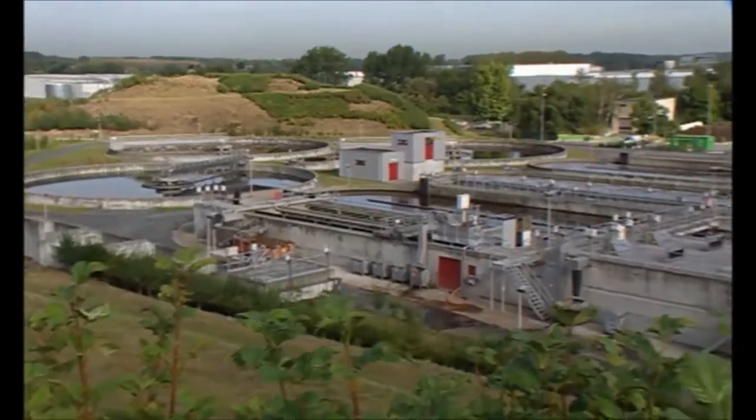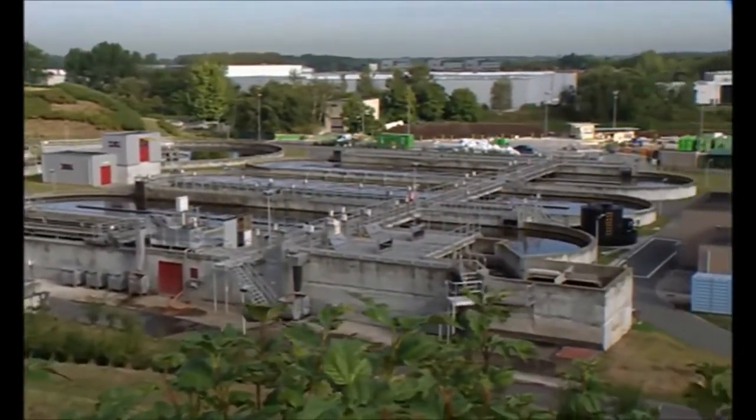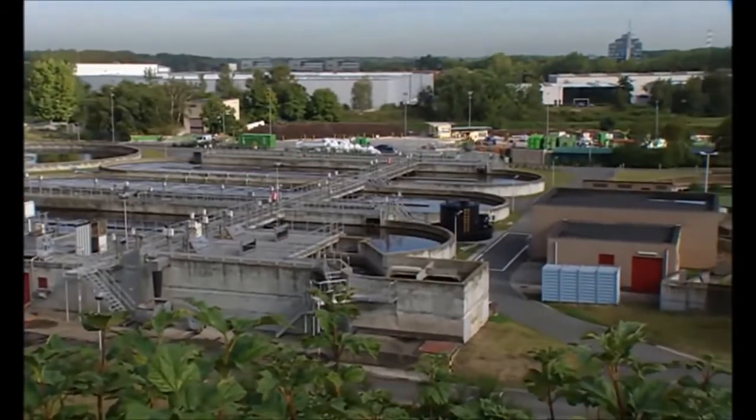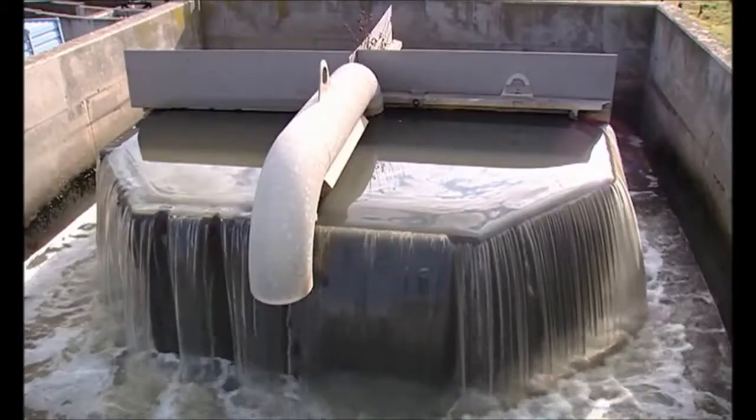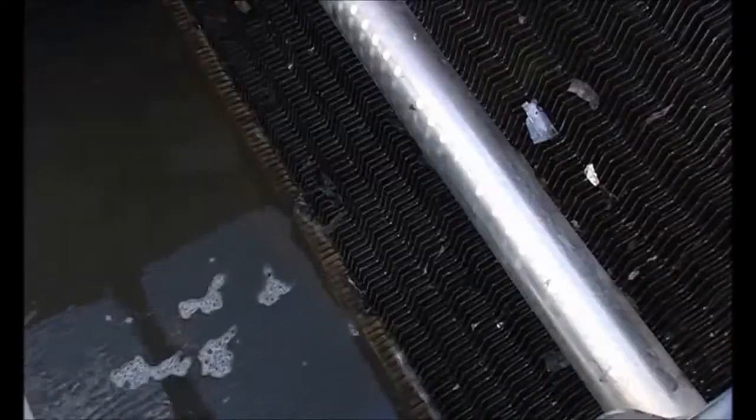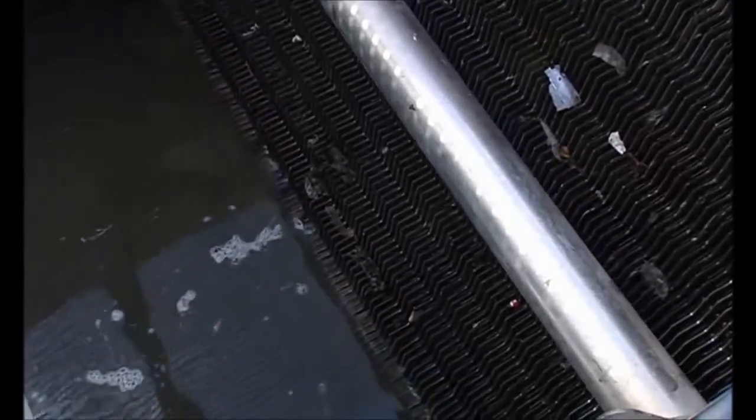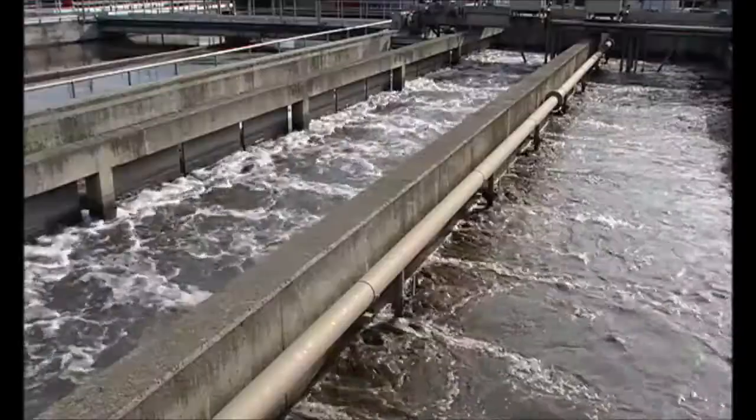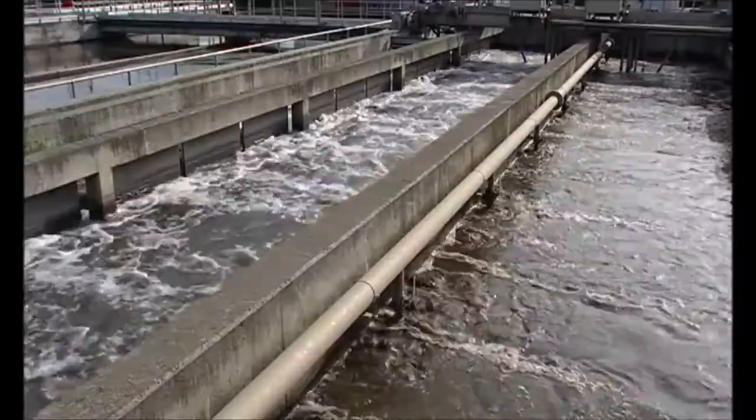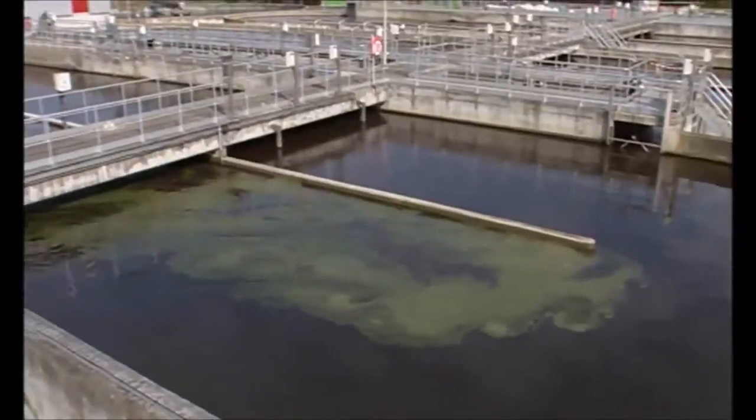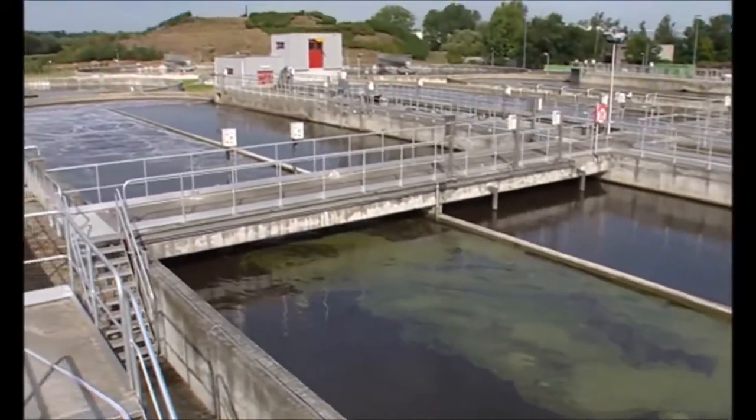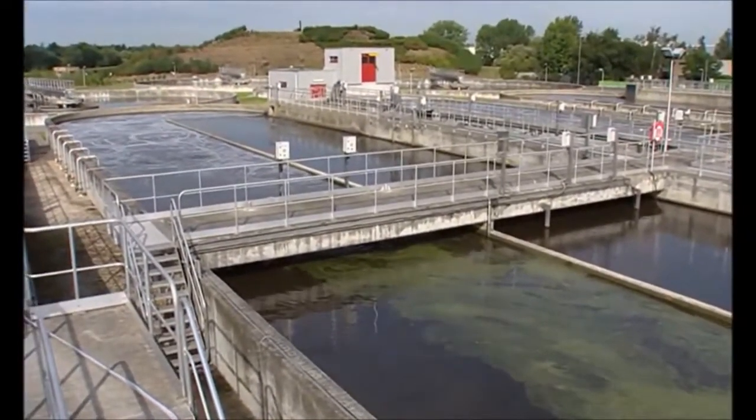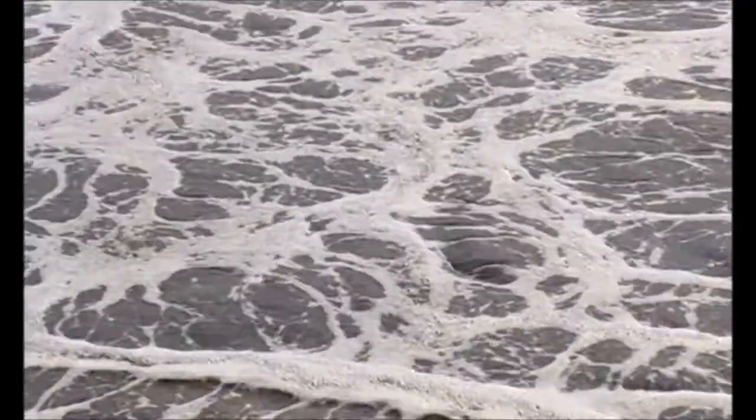At this 90,000 population equivalent wastewater treatment facility, water is purified using principles that occur naturally in a river. After mechanical raking of large objects and removal of grease and sand, small or dissolved particles are removed in a biological process step. Here, millions of bacteria feed on organic waste, breaking it up into carbon dioxide, nitrogen gas, and water.